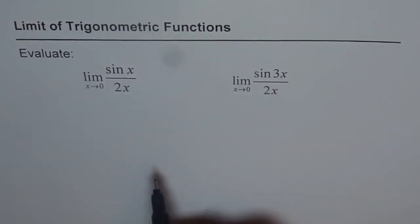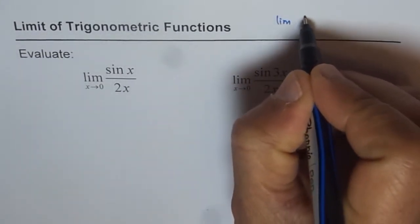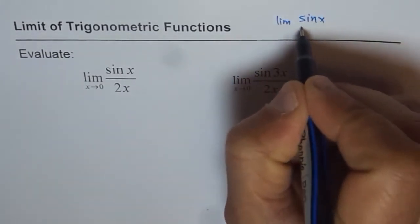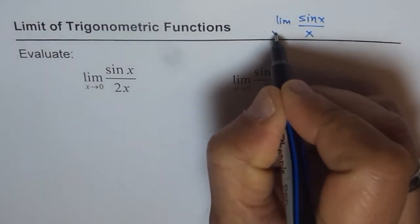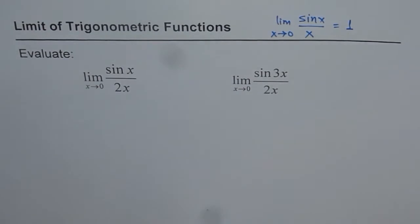Well, in both these examples, we are going to use the fundamental limit. And what is that? That is, limit of sin x over x as x approaches 0 is 1. So that is what will be applied here in both the examples.